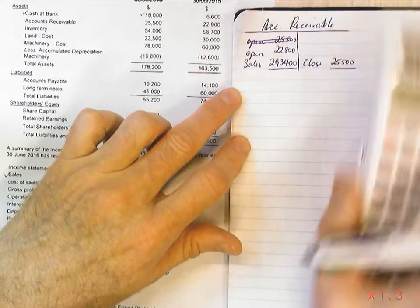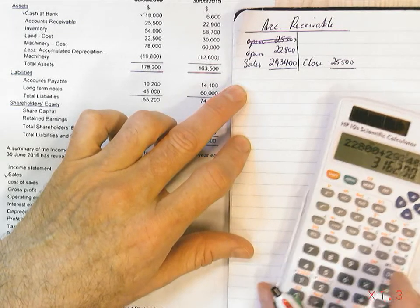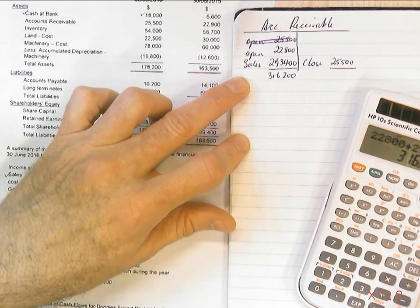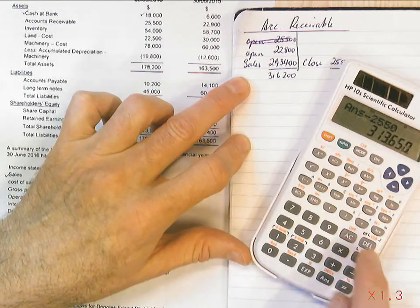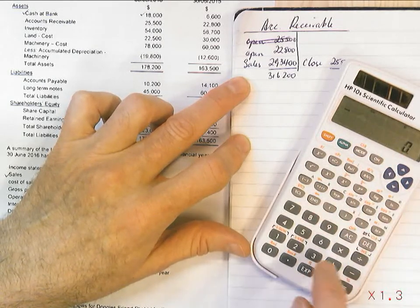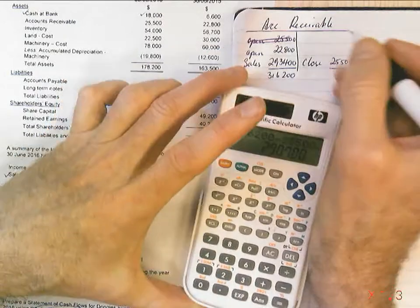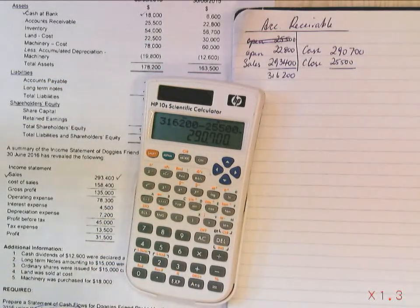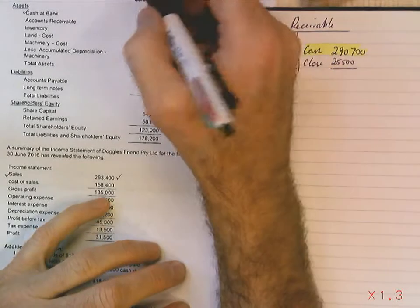What I want to do is balance the account out. $22,800 plus $293,400 equals $316,200. So my cash received from customers is $316,200 minus $25,500. I'm going to highlight that because it's going into my cash flow statement — that's the first of my cash figures. I can tick off accounts receivable.